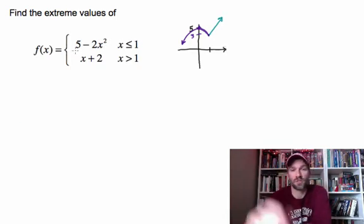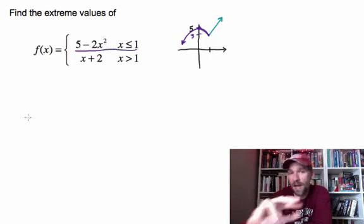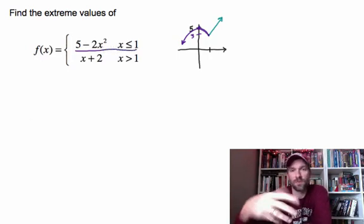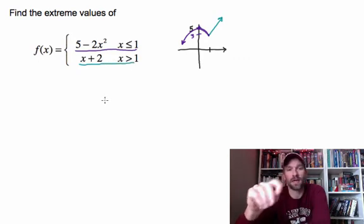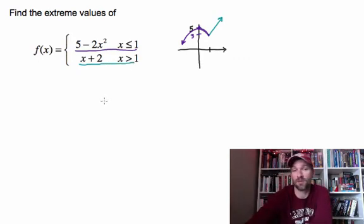In teal, then, I do the x plus 2 part. I can go up to but not include 1. Since I can go up to but not include 1, I actually am going to solve that guy out at 1. When I put 1 into x plus 2, I get 3, and then that's just going to be a line with slope of 1. So I get a graph that looks like this.